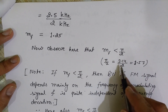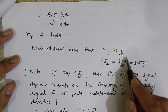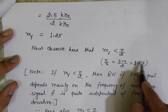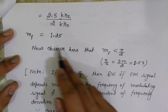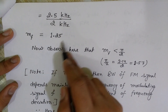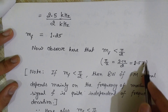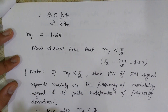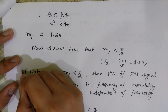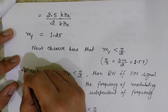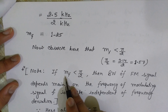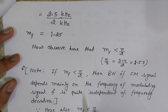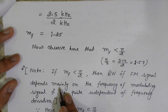Now observe that this modulation index of 1.25 is less than pi by 2. We know pi is 3.14, so pi by 2 is 1.57. The modulation index 1.25 is smaller than the value of pi by 2, which is 1.57. This is the main point — it determines how we will use Carson's rule.